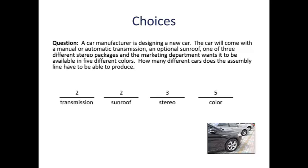Now that we have all of the counts for all of our options filled in, we can use the multiplication rule to get the total number of combinations. The multiplication rule tells us that the total number of combinations is equal to the product of the numbers in each of the individual choices. If I multiply all of those numbers together, the manufacturing department has to be ready to produce 2 times 2 times 3 times 5, or a total of 60 different cars.